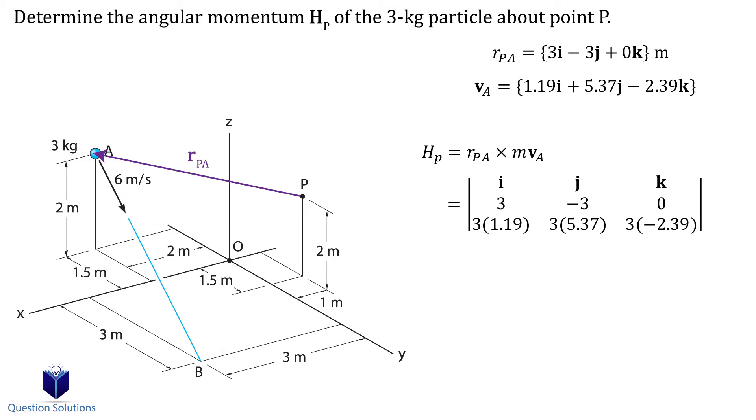Don't forget, our velocity is multiplied by the mass, which is 3 kilograms. Let's find the determinant, and that's our answer. If you used the position vector from P to B, then you'd use that vector instead of the vector from P to A. You'll get the same answer.